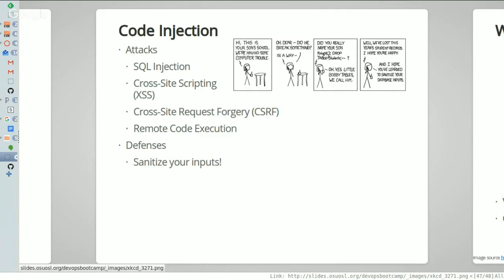There's a famous XKCD that illustrates this well. A woman names her son: Robert, apostrophe, close parenthesis, semicolon, drop tables, students, semicolon. This string is the ending of an SQL query — she's assuming they just want the 'Robert' part, then she finishes that query, starts a new query that says 'drop table students,' and finishes the SQL statement. She's assuming they have a table named 'students' and that they are not properly sanitizing their data — all of which end up being true, and they lose the entire database of their students. You'll hear this referenced as 'Bobby Tables.'